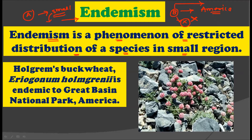So endemism is a phenomenon of restricted distribution — very restricted distribution of a species in a very small region. Now that small region may be an island, maybe a country, or maybe some natural habitat which has very unique environmental conditions.